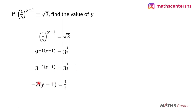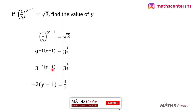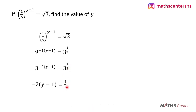When we equate the exponents, we have negative 2 times y minus 1 — the exponent on the left hand side — equal to 1 divided by 2, the exponent on the right hand side. Expanding the bracket: negative 2 times y gives us negative 2y, and negative 2 times negative 1 gives us positive 2. This is equal to 1 divided by 2.